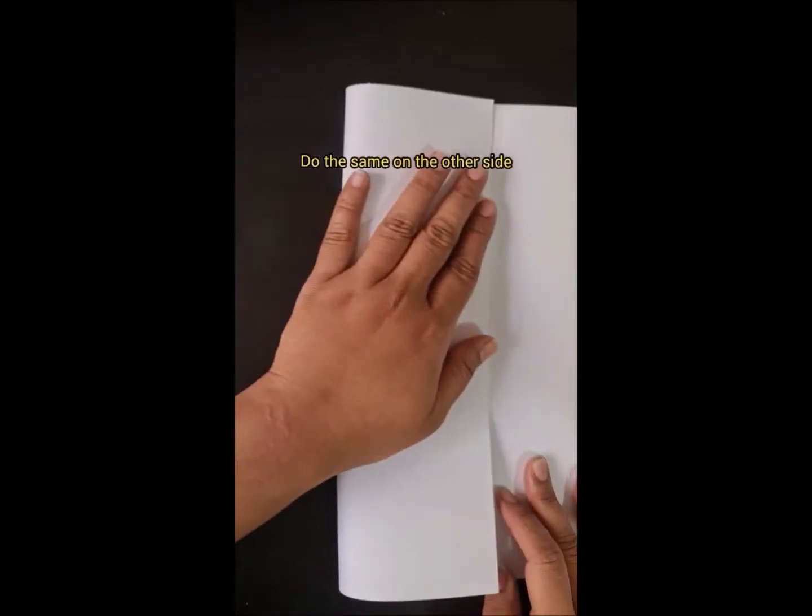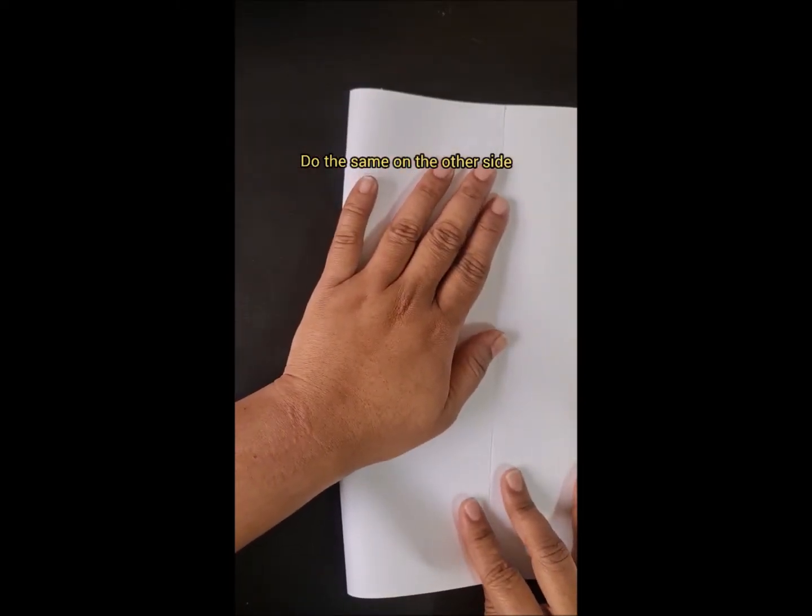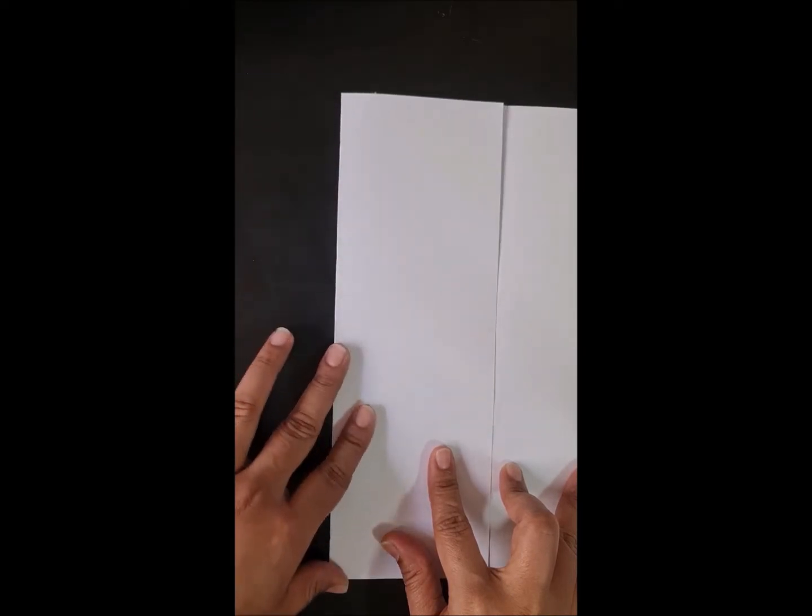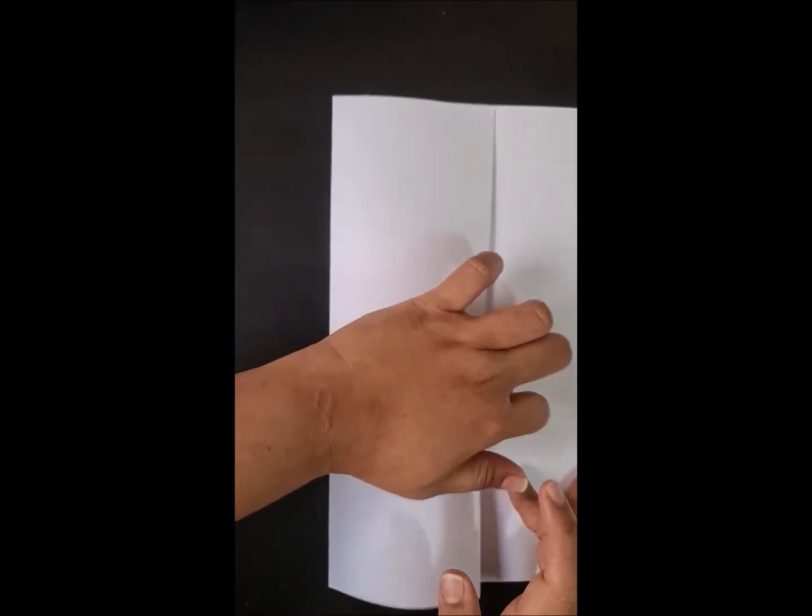We will do the same on this side too. Now you will see you have four rectangles on your paper, and you will see three lines in the middle.